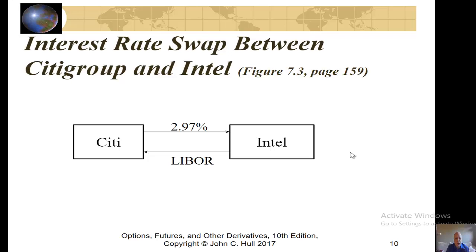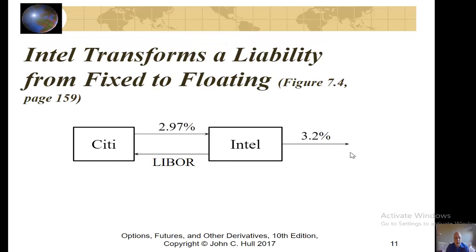Here is another example of a swap, in this case between Citibank and Intel, where Intel agrees to pay LIBOR to Citibank and receive 2.97%. In this example, Intel is going to be converting a liability from a fixed rate to a floating rate. Initially they have a liability of 3.2%. They engage in the swap, and now they end up with a floating rate liability of LIBOR plus 3.2% minus 2.97%, or LIBOR plus 0.23%.